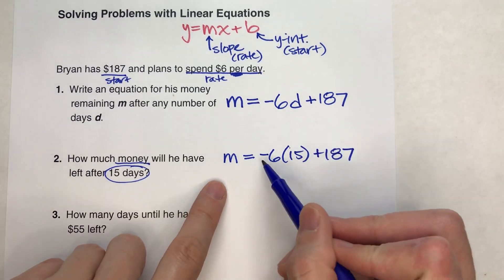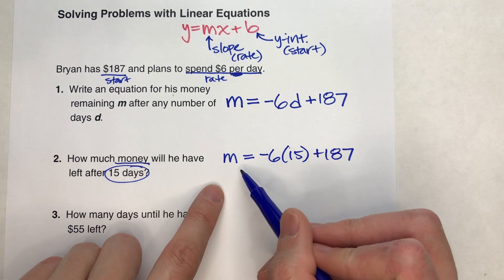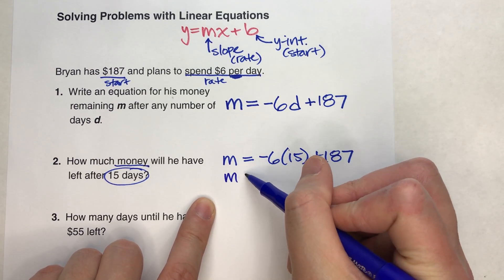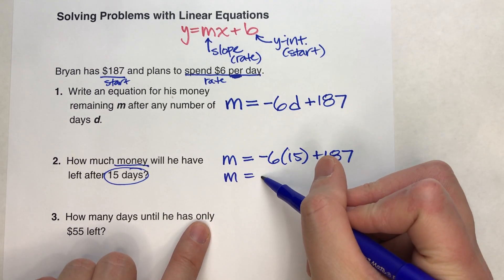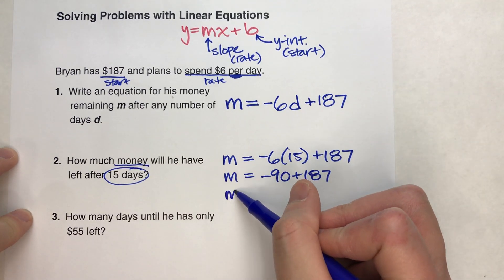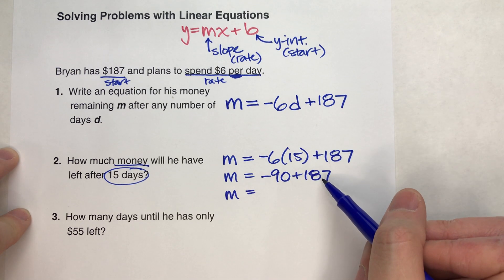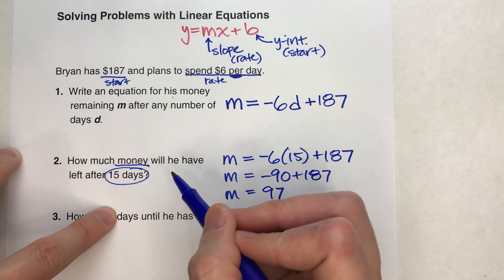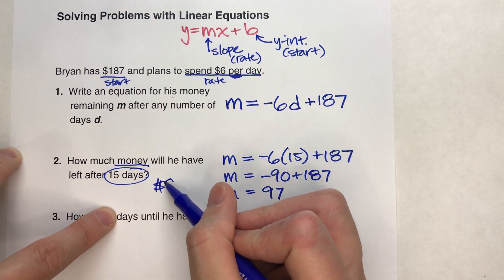And if we calculate this out, it'll tell us how much money he has. So let's do that. Negative 6 times 15 is negative 90 plus the $187. And negative 90 plus $187 is 97. We just found our answer. He'll have $97.